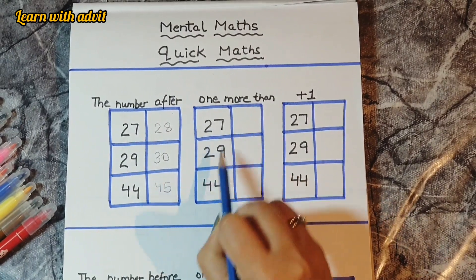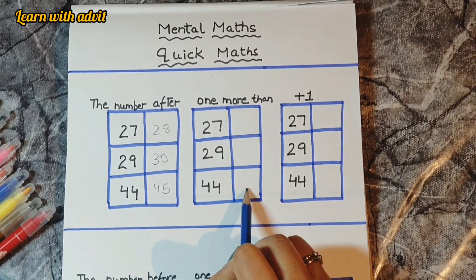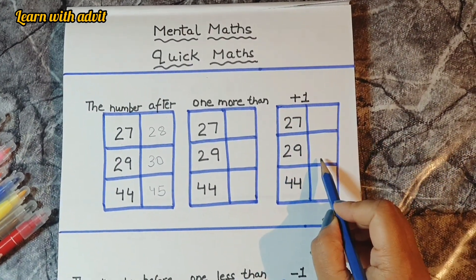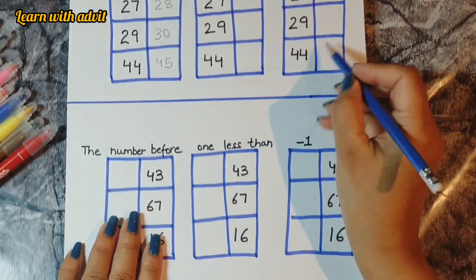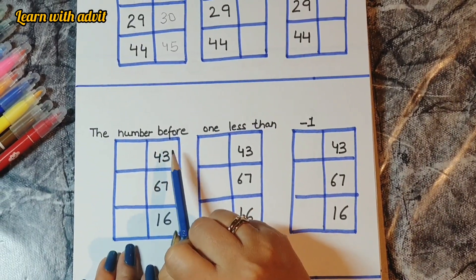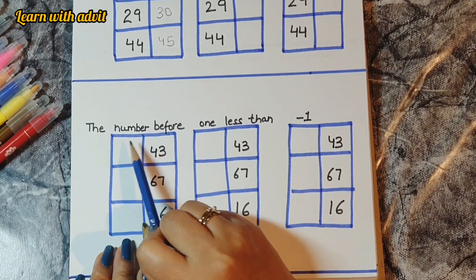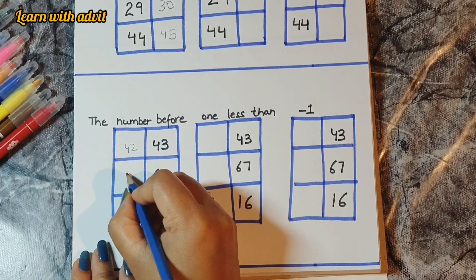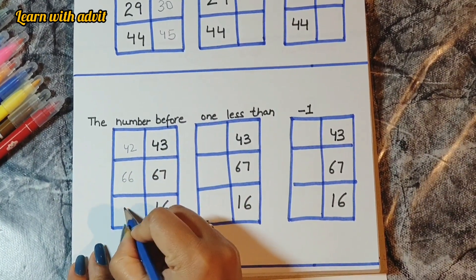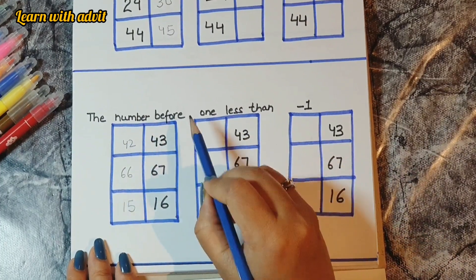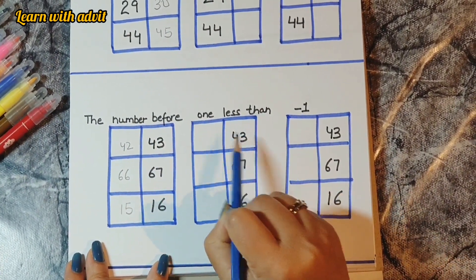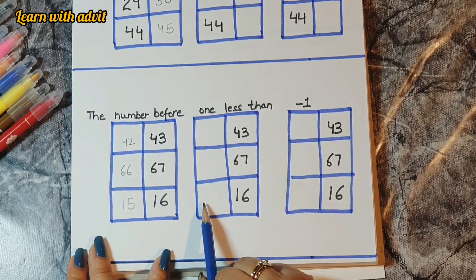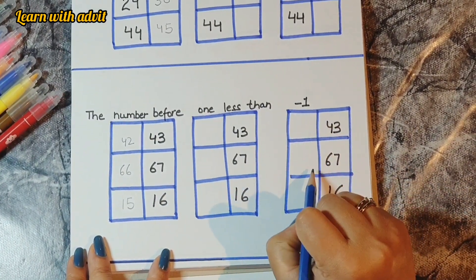One more than and plus one mean the same thing. So: one more than 27 is 28, one more than 29 is 30, one more than 44 is 45. And 27 plus 1 is 28, 29 plus 1 is 30, 44 plus 1 is 45. For before: the number before 43 is 42, before 67 is 66, before 16 is 15. We can also phrase it as one less than: one less than 43 is 42, one less than 67 is 66, one less than 16 is 15.